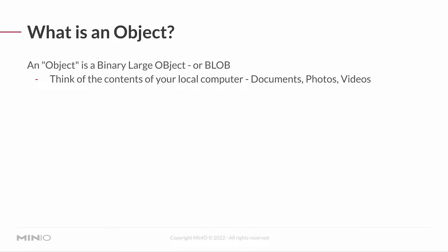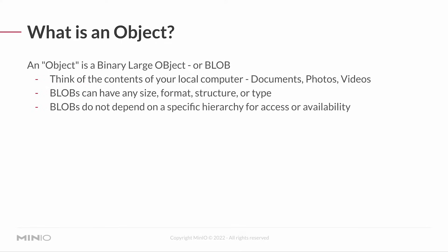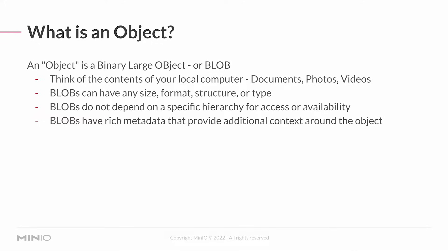This blob can be really anything. You can think of the contents of your local system — maybe you've got some documents, photos, music files, videos, all kinds of different stuff. Each of those can be a blob because blobs can have any size, any format, any structure, and can be of any type. All you're doing with MinIO is uploading those blobs. They don't have to depend on a specific hierarchy for access or availability. If your user has the right access, you can download it or work with it. Individual blobs will have some metadata associated with them that can contain all sorts of information about the context of the object, and that metadata is stored with the object.